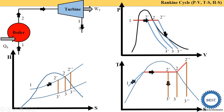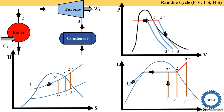Steam coming out of the turbine is supplied to the condenser, which is a type of heat exchanger where condensation occurs — meaning steam is converted into water. In a heat exchanger, the process is carried out at constant pressure (assuming no friction losses). In the condenser, the process is constant pressure heat rejection.